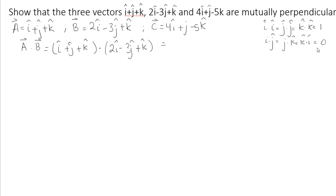So using these characteristics, I can simplify this expression. I just need to multiply i with i, j with j, and k with k. So this will give me 2-3+1 which is equal to zero. So A·B equal to zero means that A is perpendicular to B.